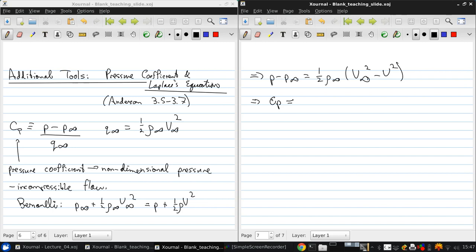The pressure coefficient is just a rearrangement of this equation. And if we write this out, you can see that it's one-half rho V infinity squared minus V squared over one-half rho V infinity squared. We can actually write this for incompressible flow just in terms of the velocity as one minus V over V infinity squared.